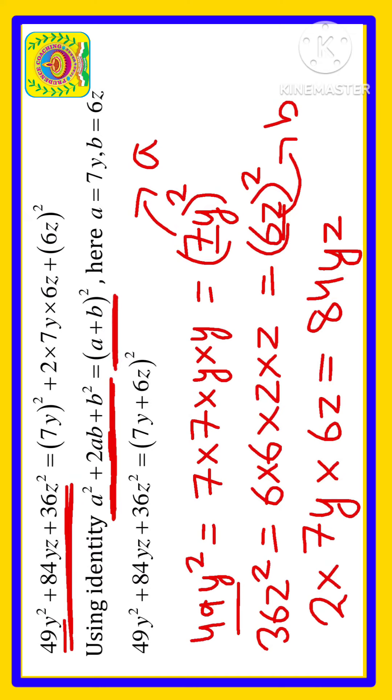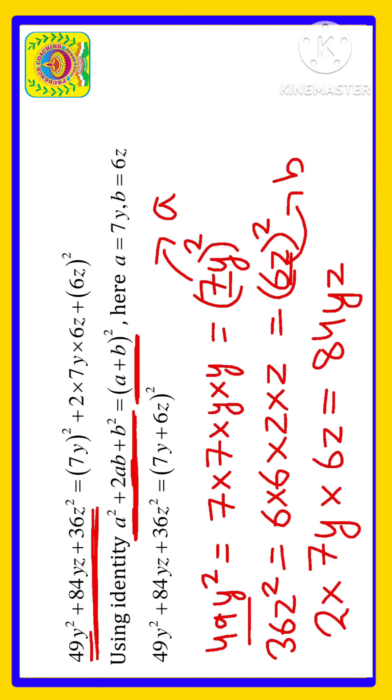So you can write this as (a + b)². As you can see we have found out a is 7y and b is 6z, so we can write (7y + 6z)². This is our final answer.